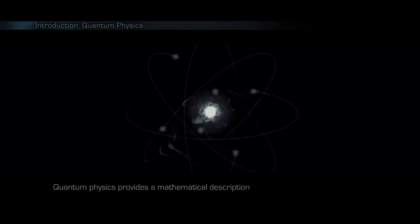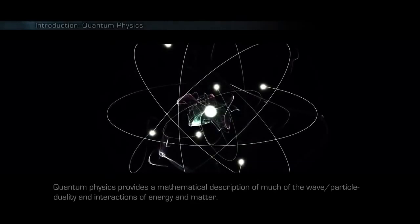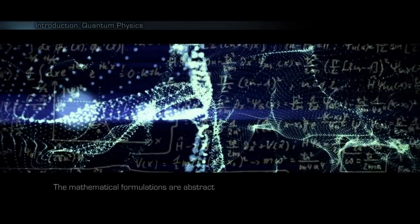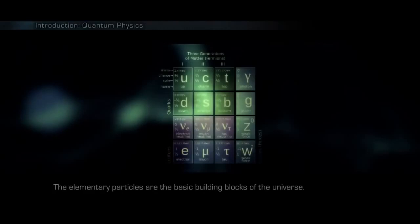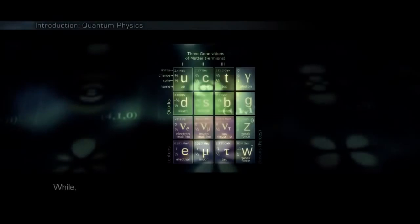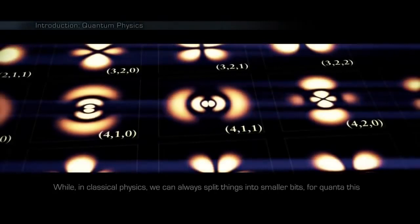Quantum physics provides a mathematical description of much of the wave-particle duality and interactions of energy and matter. It departs from classical physics primarily at the atomic and subatomic scales. The mathematical formulations are abstract and the implications are often non-intuitive. A quantum is the minimum unit of any physical entity involved in an interaction. The elementary particles are the basic building blocks of the universe. They are the particles which all other particles are made of. While in classical physics we can always split things into smaller bits, for quanta this is impossible.